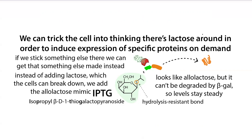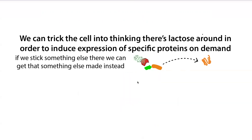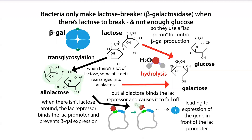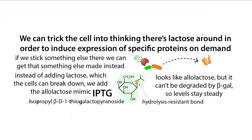We call it IPTG. The reason we use IPTG is because it looks like allolactose and can still bind to the lac repressor, but it can't be degraded by beta-gal, so the levels stay steady. It has thioether bonds, which can't be hydrolyzed the way lactose is, so the beta-galactosidase isn't going to be able to break it down. This is important because if you added lactose or allolactose, the cells can break it down, leaving less lactose around, causing the repressor to stay bound — negative feedback stopping production. By using IPTG that can't get broken down, it hangs around, leading to stable levels and longer-term expression.